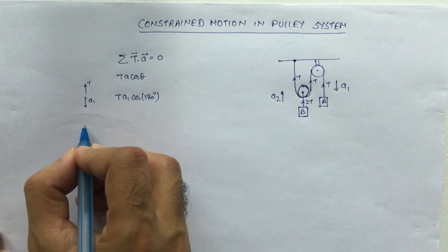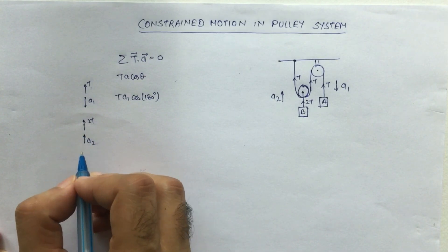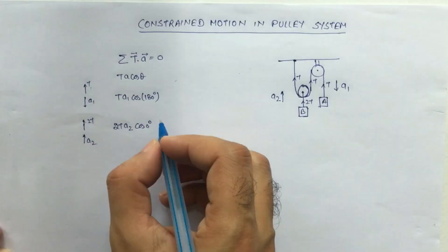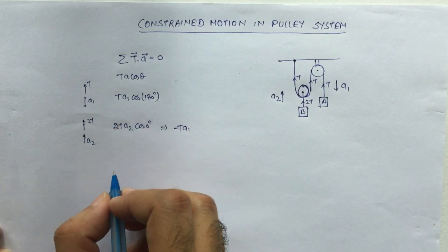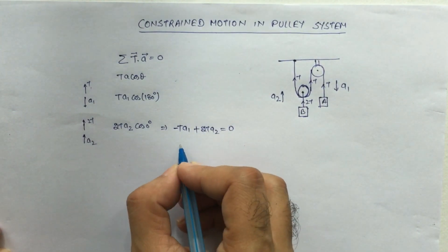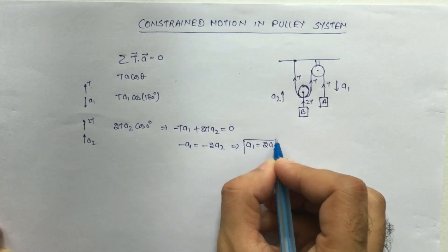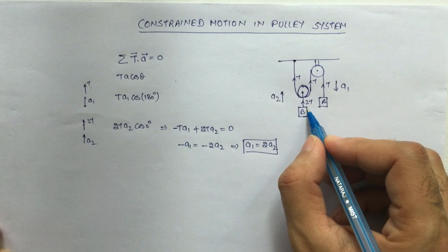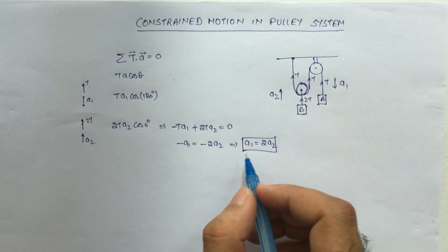So for block A we get T·a1·cos(180°). For block B, the tension is 2T upward and the acceleration a2 is also upward, so the angle is 0 degrees, giving 2T·a2·cos(0°). Setting the summation equal to zero: T·a1·cos(180°) + 2T·a2·cos(0°) = 0, which gives −a1 + 2a2 = 0, so a1 = 2a2. This gives us the relation between a1 and a2 — block A moves at twice the speed of block B — and we can now solve the full problem using FBD.